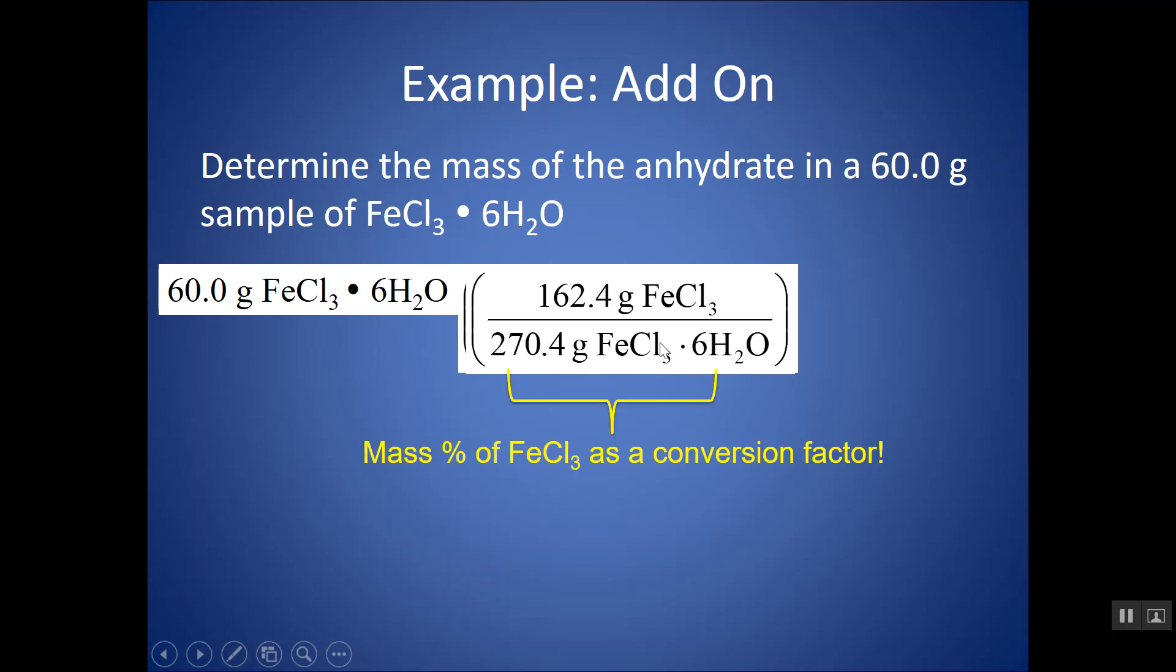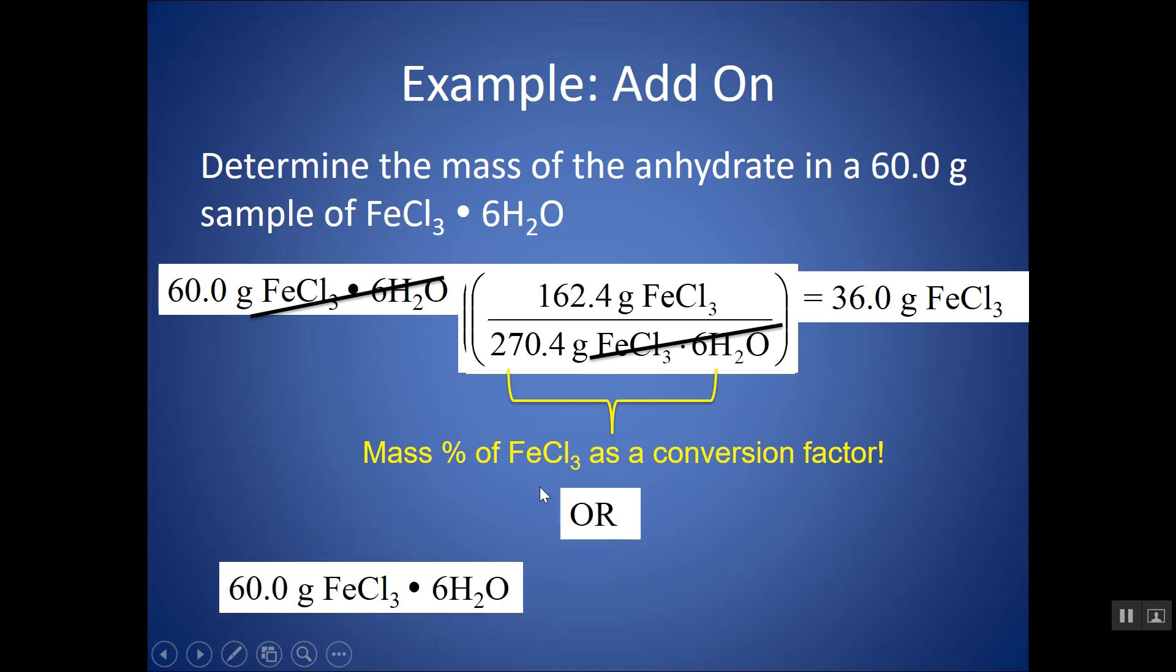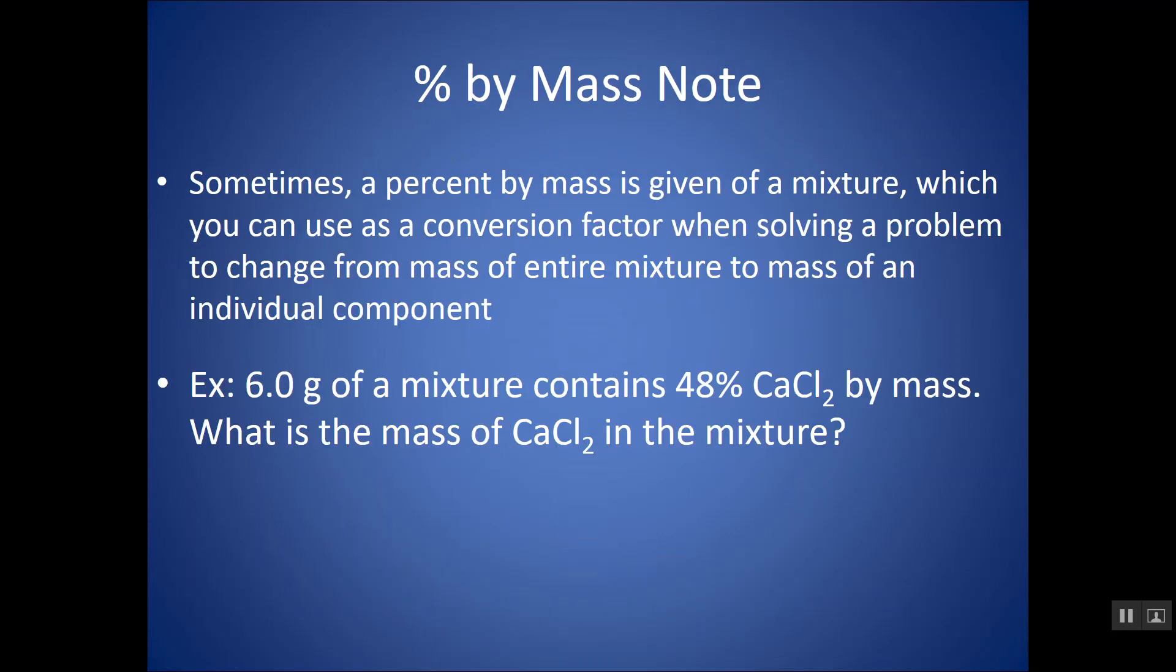I could put the molar mass down here because I know for every 270.4 grams of the whole thing, there would be 162.4 grams of FeCl3. That's the molar mass of FeCl3. And you would get, when I put this into my calculator, 36 grams. It's essentially taking that 60 grams of the whole and multiplying it by the percent FeCl3 by mass, which is about 60%. You're taking 60% of that whole thing. So, this is allowing you to convert between mass of part and mass of whole.